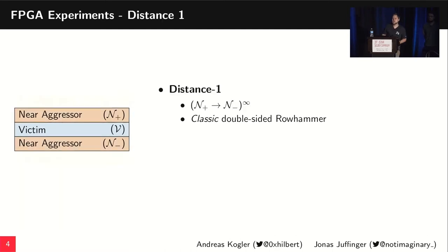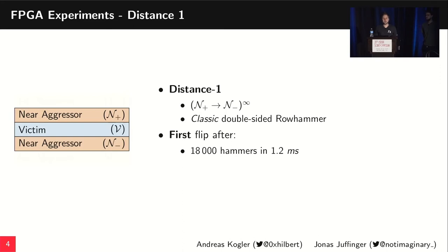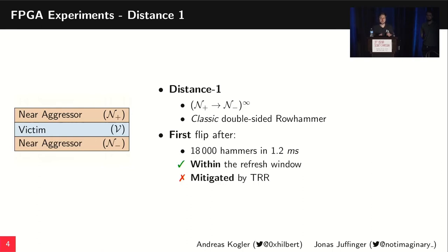The first experiment we conducted with the FPGA setup was mounting classic double-sided Rowhammer on the victim row V, and we simply looked at how fast we can inject a bit flip into V. The first flip occurred after around 18,000 hammers — approximately 1.2 milliseconds of constant hammering — which fits within the refresh interval of modern RAM. However, we have an active defense against it: TRR. That's the perfect case for TRR, where it activates before the 18,000 activations are reached and issues a refresh to victim V.